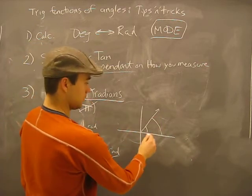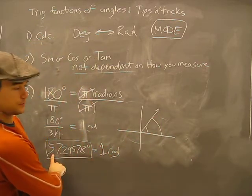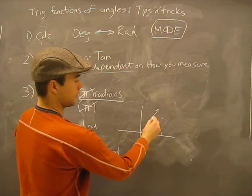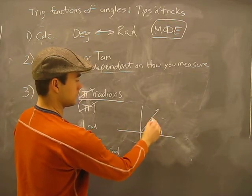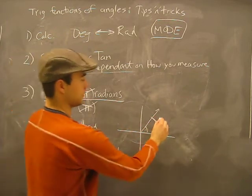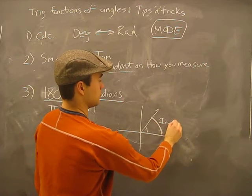And on an angle of this many degrees right here, the length of this arc will be 1 radian, okay?